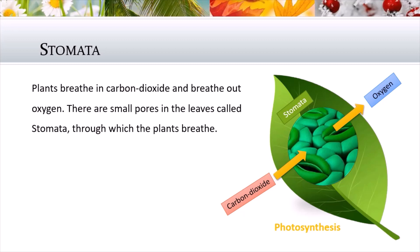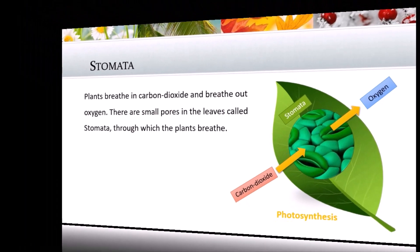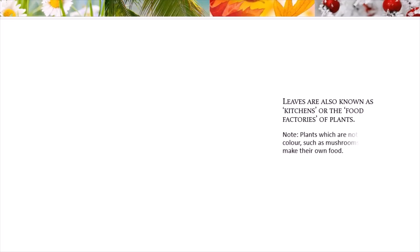Plants also produce oxygen, which is a very important use of plants. Leaves are also known as kitchens or the food factories of plants. Plants which are not green in color, such as mushrooms, do not make their own food.